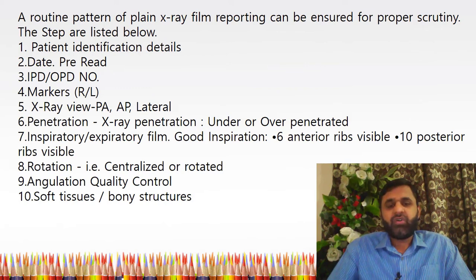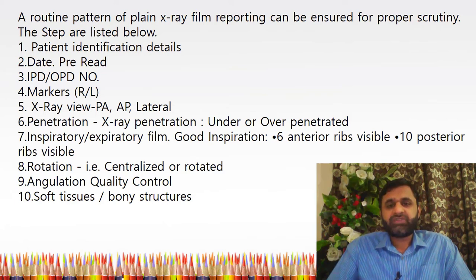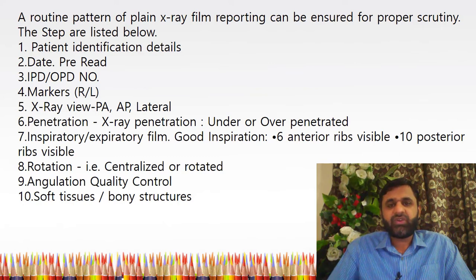Next, assess penetration — whether under-penetrated or over-penetrated. In chest X-ray, label whether it is an inspiratory or expiratory film. Usually chest X-rays are taken in the inspiratory phase; with good inspiration, six anterior ribs and ten posterior ribs are visible. Then assess rotation — whether the thoracic spine is aligned or not — and angulation, quality control, and finally comment on soft tissues and bony structures for any abnormalities.